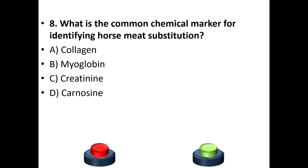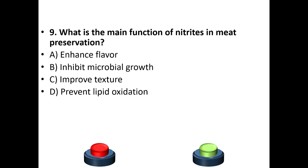Eighth question: What is a common chemical marker for identifying horse meat substitution? Options: collagen, myoglobin, creatinine, carnosine. The most appropriate answer is carnosine.